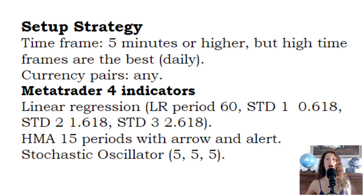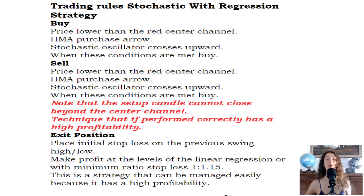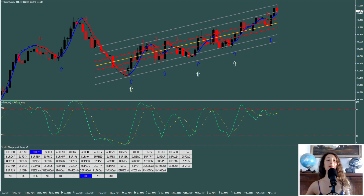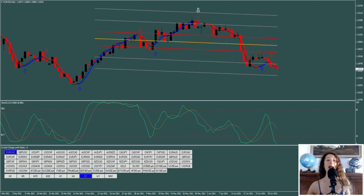Trading rules — Stochastic with Regression Strategy. Buy: price lower than the red center channel, HEMA buy arrow, Stochastic Oscillator crosses upward. When these conditions are met, buy. Sell: price higher than the red center channel, HEMA sell arrow, Stochastic Oscillator crosses downward. When these conditions are met, sell.